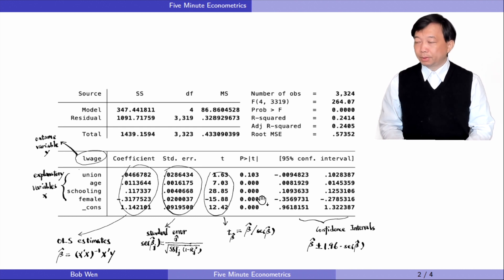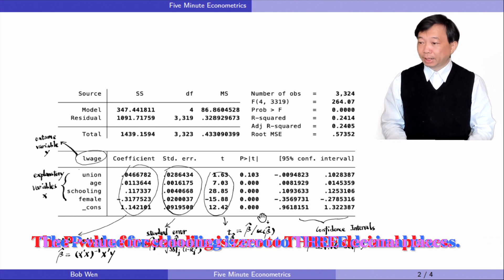The next column is the p-values. The p-value is the probability of observing a t statistic as extreme as we did if the null hypothesis is true. Therefore, a tiny p-value implies observing a t statistic as large as we did under the null hypothesis is almost impossible. In other words, the null hypothesis is probably false. It is evidence against the null hypothesis. For example, the p-value for schooling is zero to four decimal places.